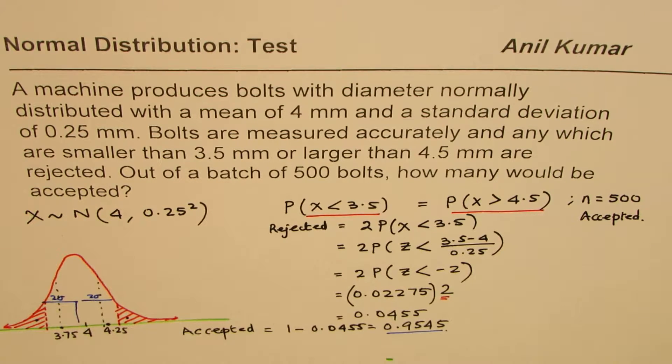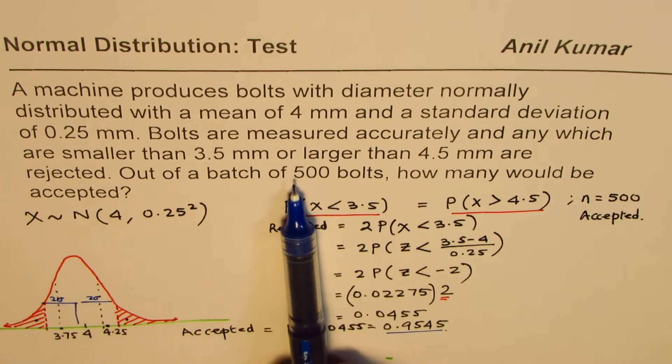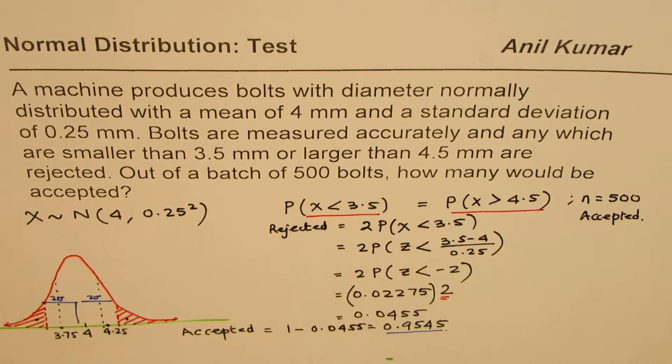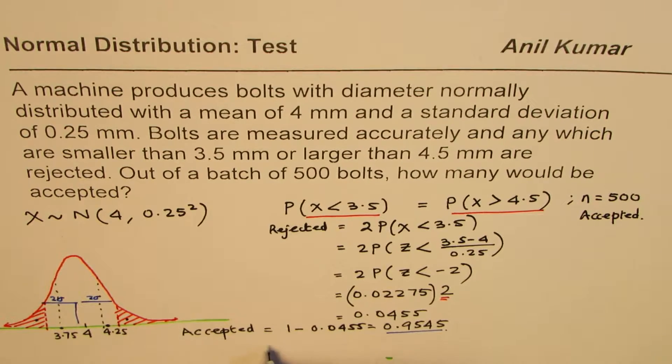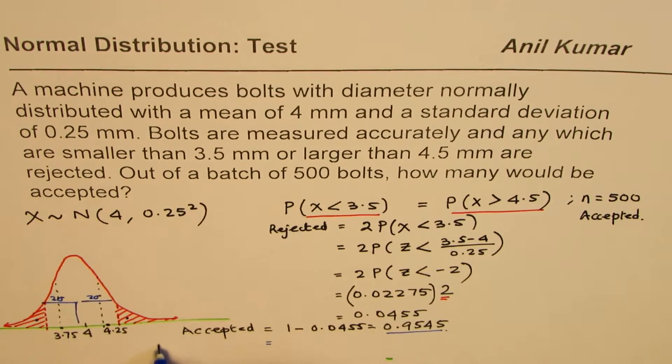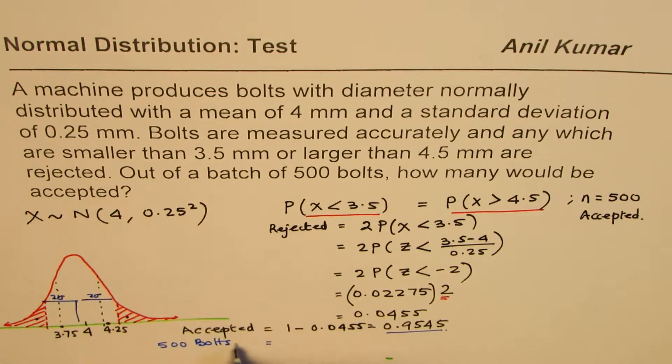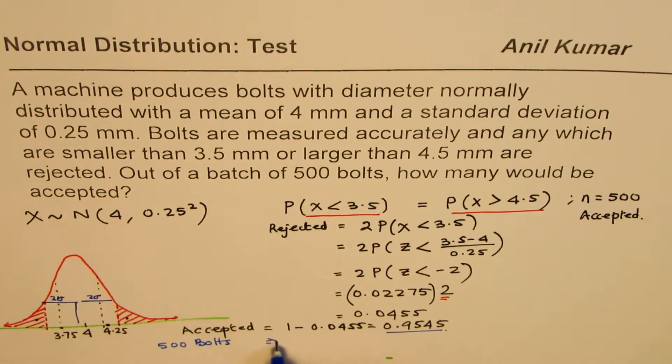Okay, now the batch is of 500 bolts. So out of 500 how many? So accepted out of 500 bolts, we have 500 bolts production, out of them how many will be accepted?